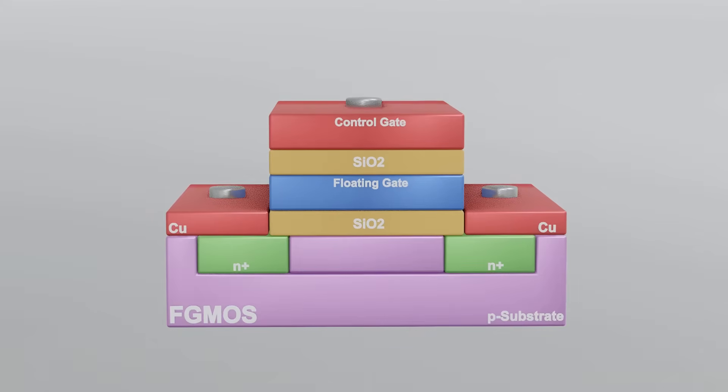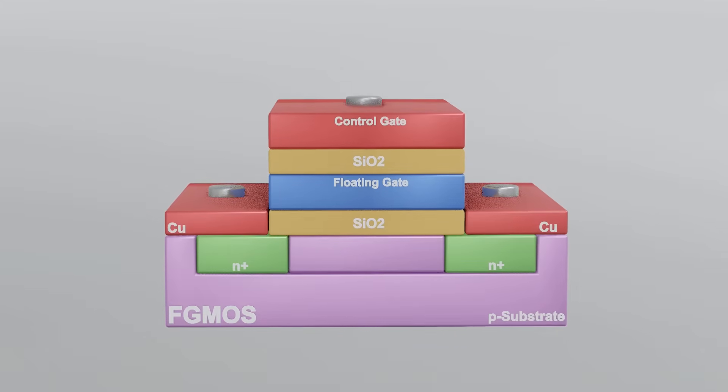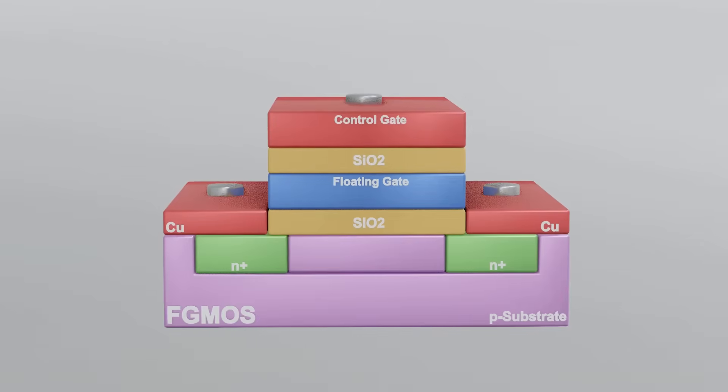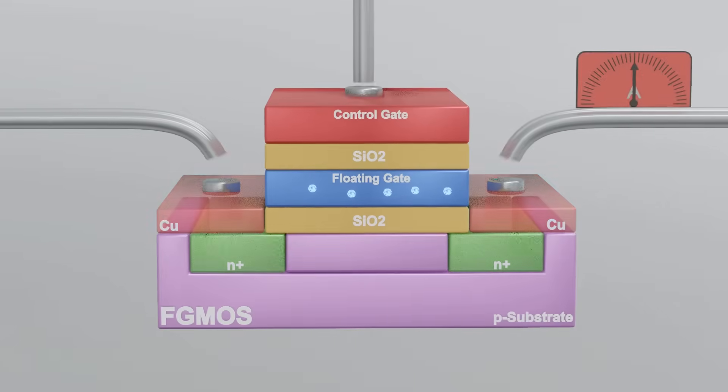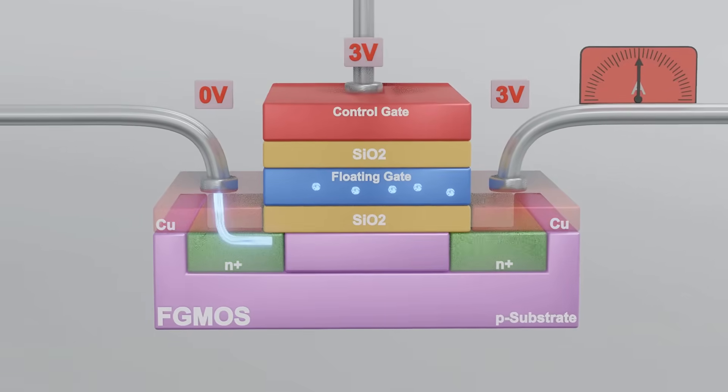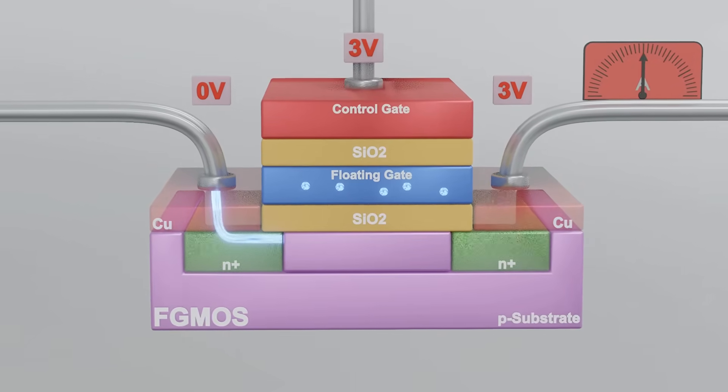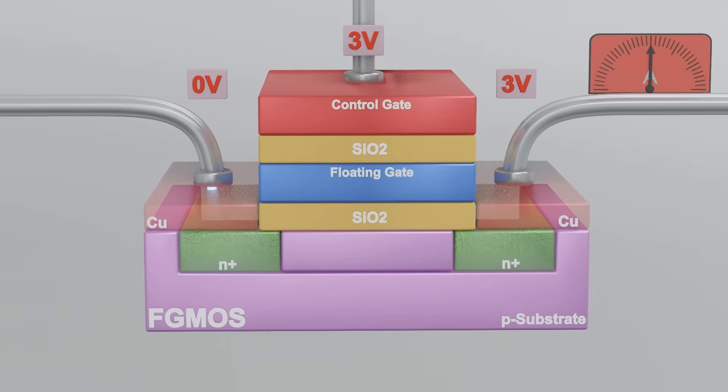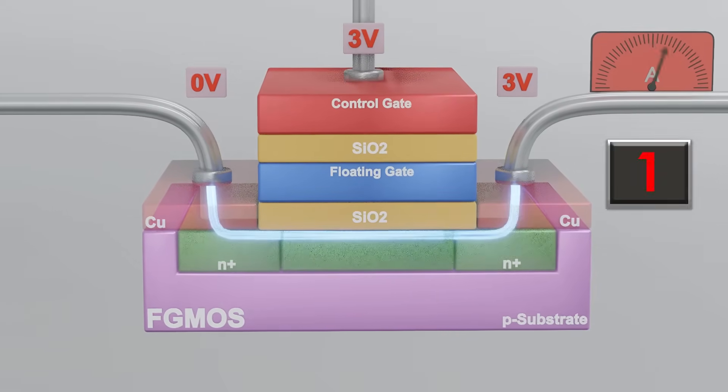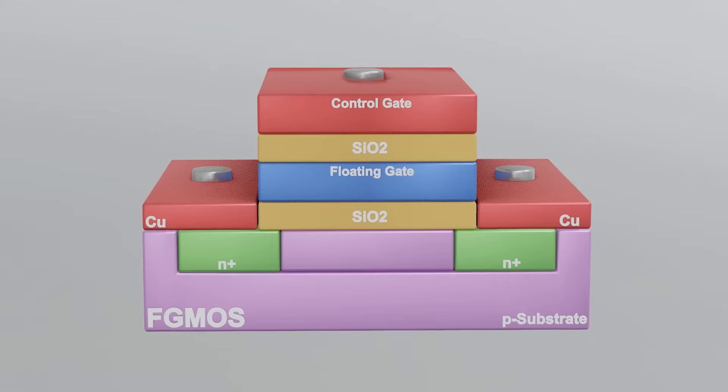But how do we know if the electron is present in the floating gate MOSFET or not? Or how do we read the data? Well, when an electron is present, the threshold voltage is increased. Hence the current cannot flow through the substrate and the bit states a zero. When an electron is absent, the current flows through the transistor and the bit states a one. This is how it reads the data.